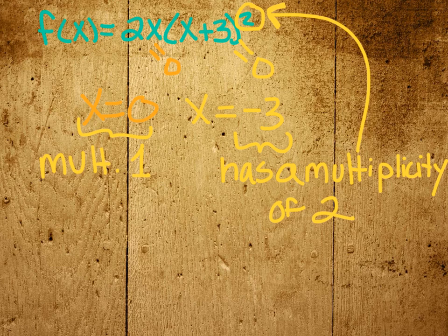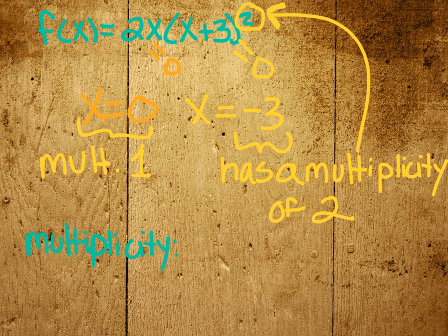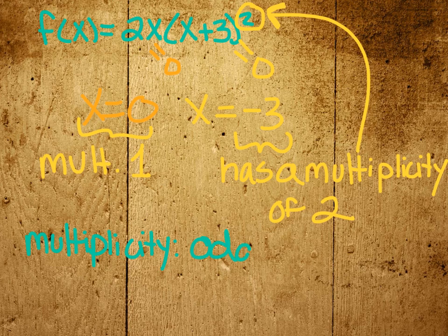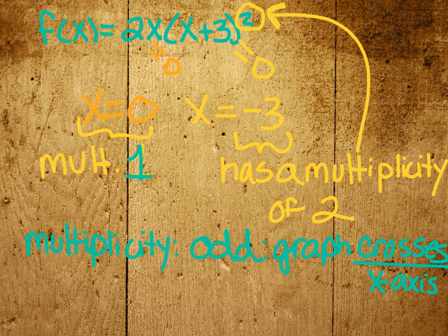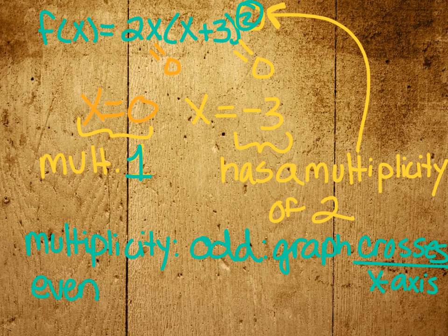So what does that mean when we graph? Well, think about what it meant when you had a parabola. It meant that your parabola bounced on the x-axis instead of crossing through it. So let's write a note for ourselves about multiplicity. If your multiplicity is odd, or if it was to the third power or the fifth power or any other odd power, then the graph crosses the x-axis at that zero. And if the multiplicity is even, like this one, then our graph is going to bounce on the x-axis.